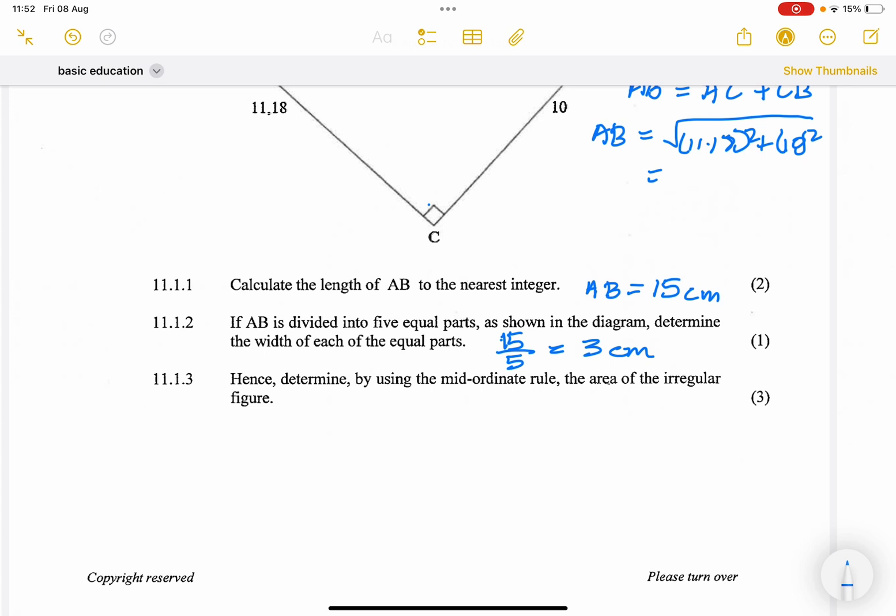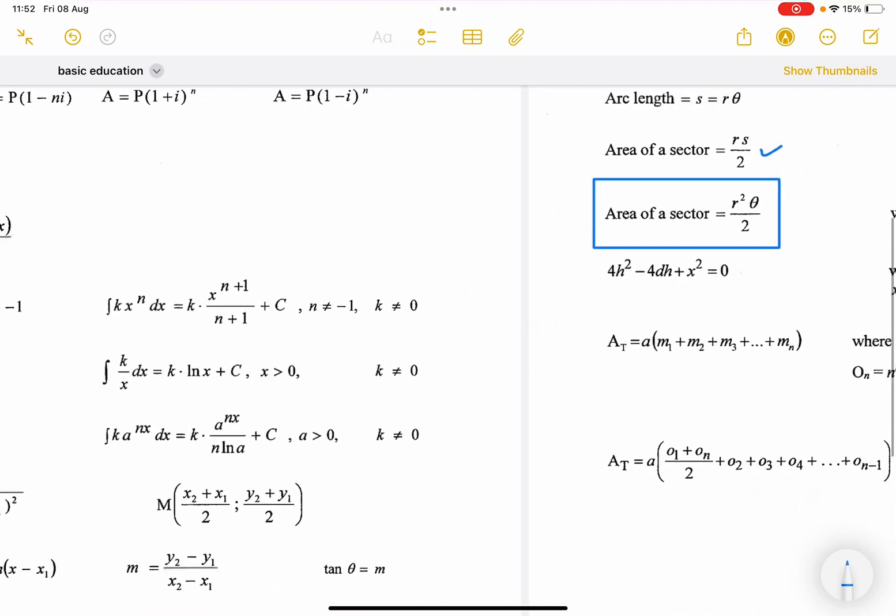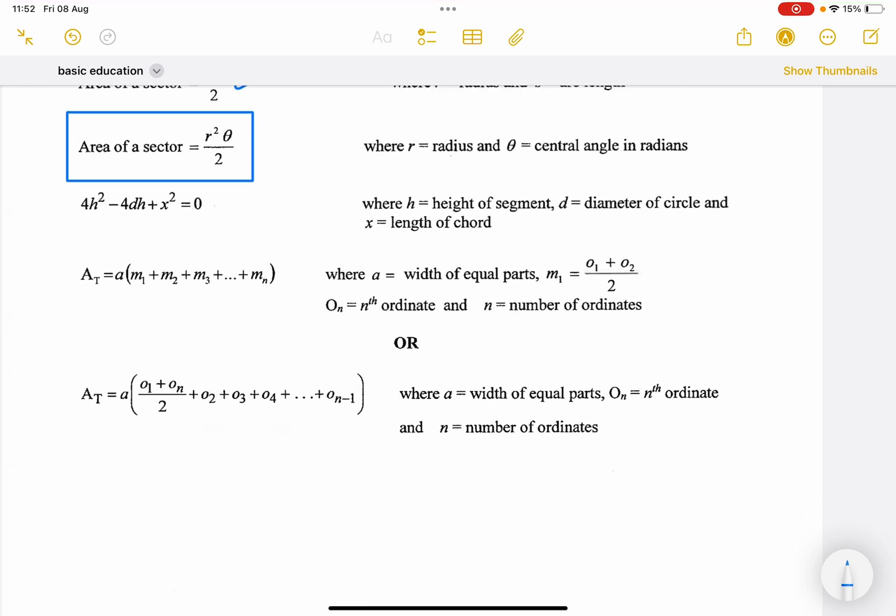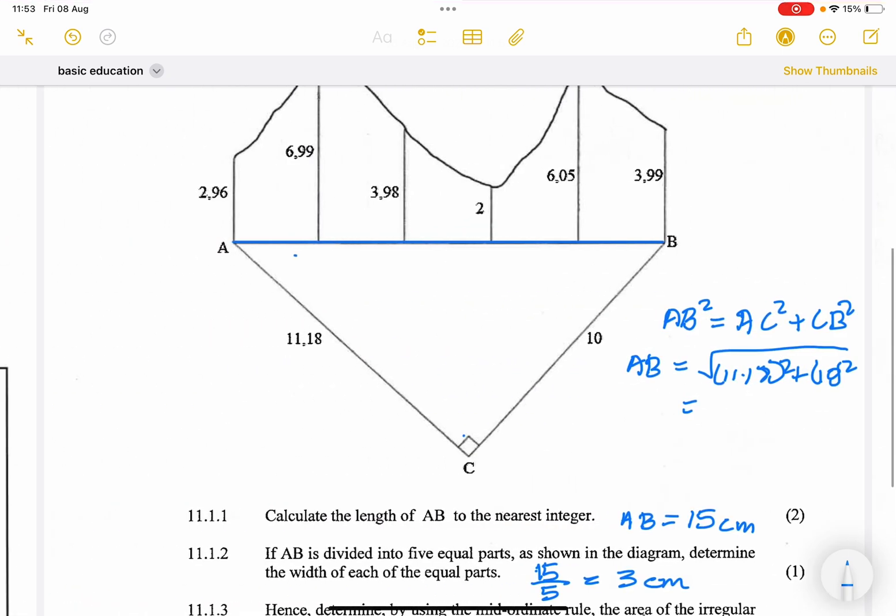Now they say, hence, determine by using the mid-ordinate rule, the area of the irregular figure. So remember for our mid-ordinate rule, this is what we are going to be using. And by the way, nothing wrong if you decide, actually it's exactly the same thing, it's just that the other one is the expression of the other.